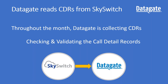Our first integration in the diagram is with SkySwitch, where we take the call detail records. At DataGate we get to see all the calls your customers are making, and we can validate that everything's been configured correctly. We see the calls come through, match the phone numbers and DIDs against what's been configured in DataGate. We also enable you to create any kind of pricing plan — buckets of minutes, overages, international toll rating, 0800 numbers, toll free — we support all the standard pricing mechanisms.